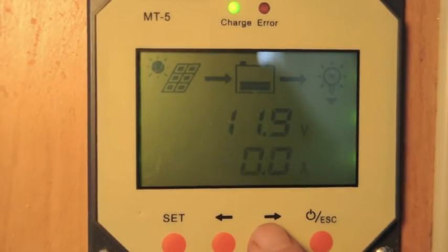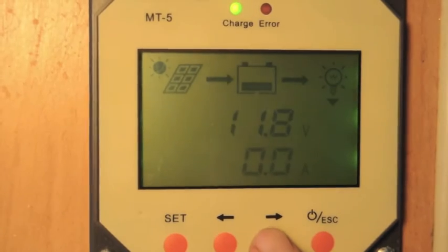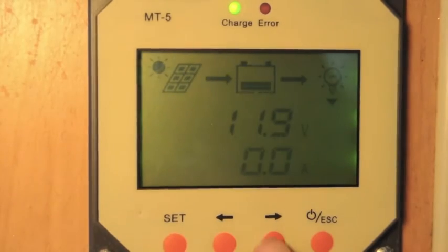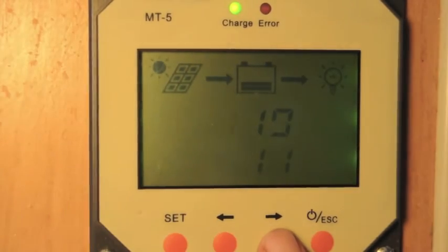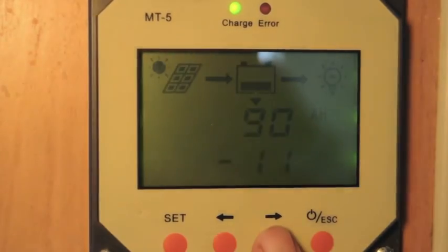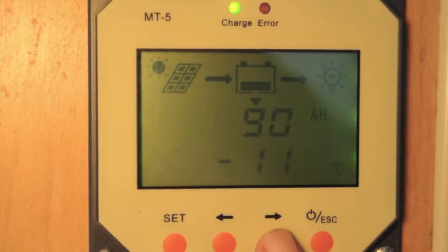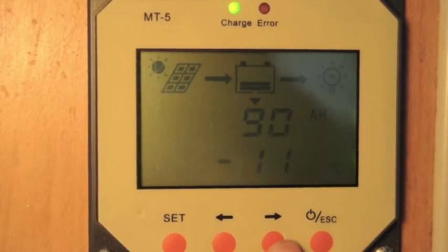And then the third item is the powers on. So, the question was how to set some of the settings here. I'm going to scroll to my amp hours. This was the question, how to set this. I've got mine set to 90 because I have an AGM battery in there, about 90 amp hours. I think it's 92 amp hours or something.